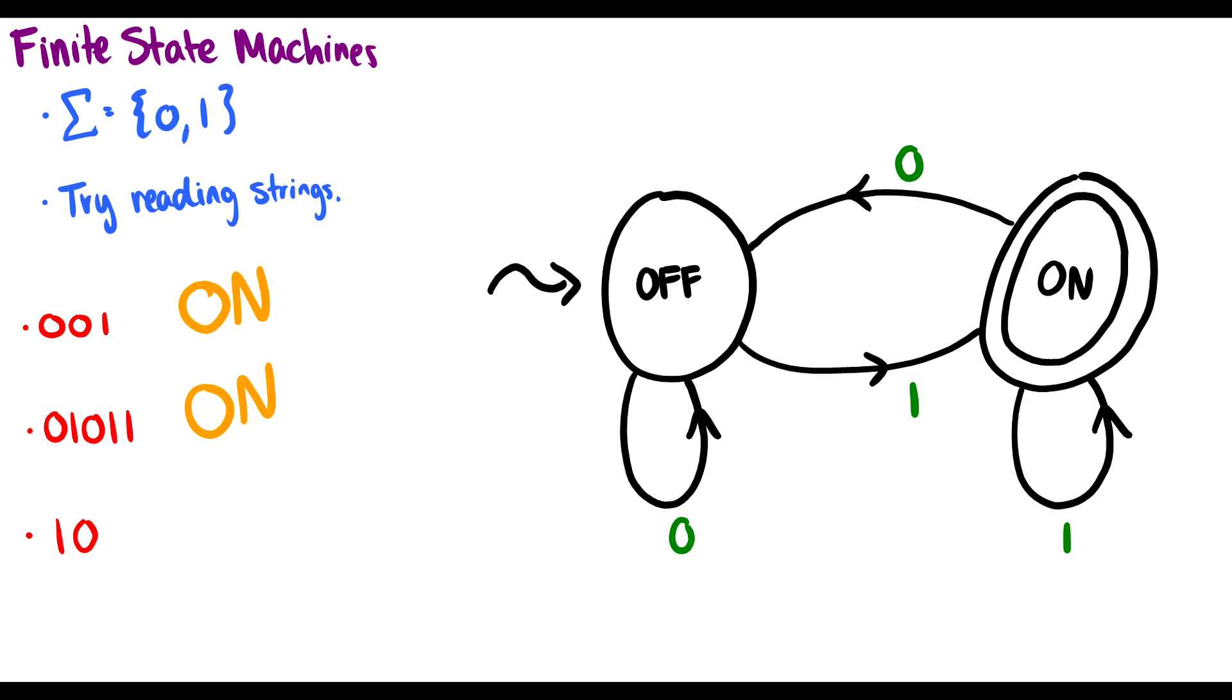Third one. I start at the off state. I read a 1, so I go to on. Then I read a 0, so I follow the arrow back to off and I end at off.